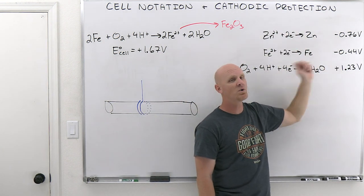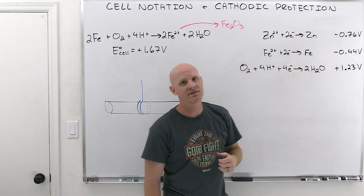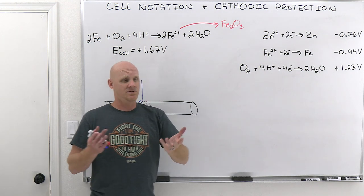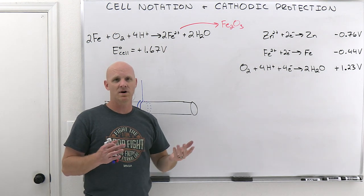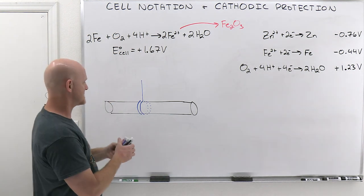When iron's oxidized, it's positive 0.44 volts. When zinc is oxidized, it's positive 0.76 volts. And so if you've got a choice of which one's going to happen, well whichever one is more spontaneous generally is going to happen, and that's going to be the zinc in this case.